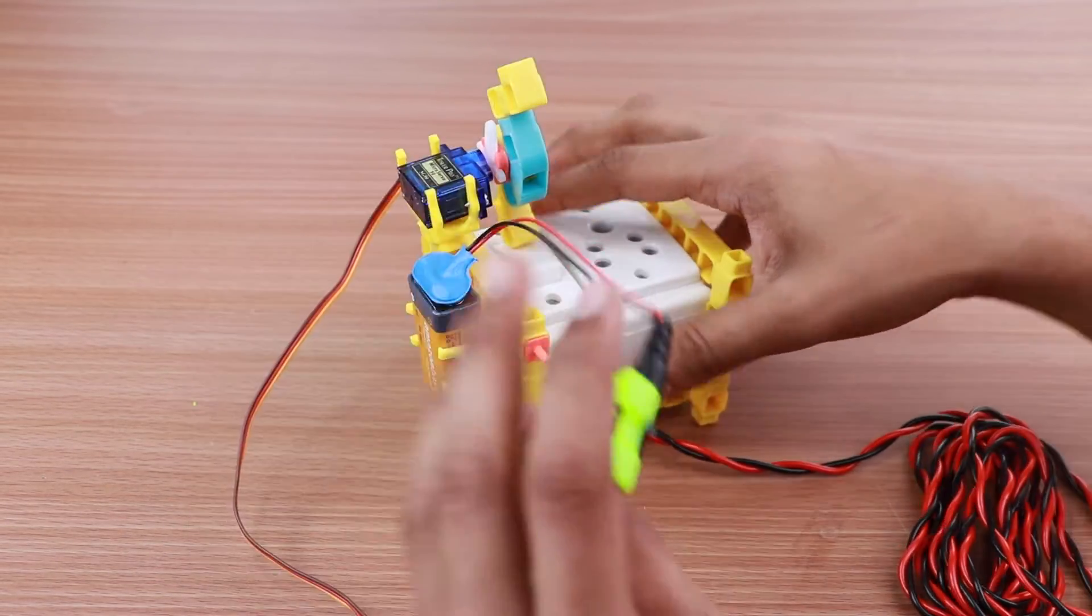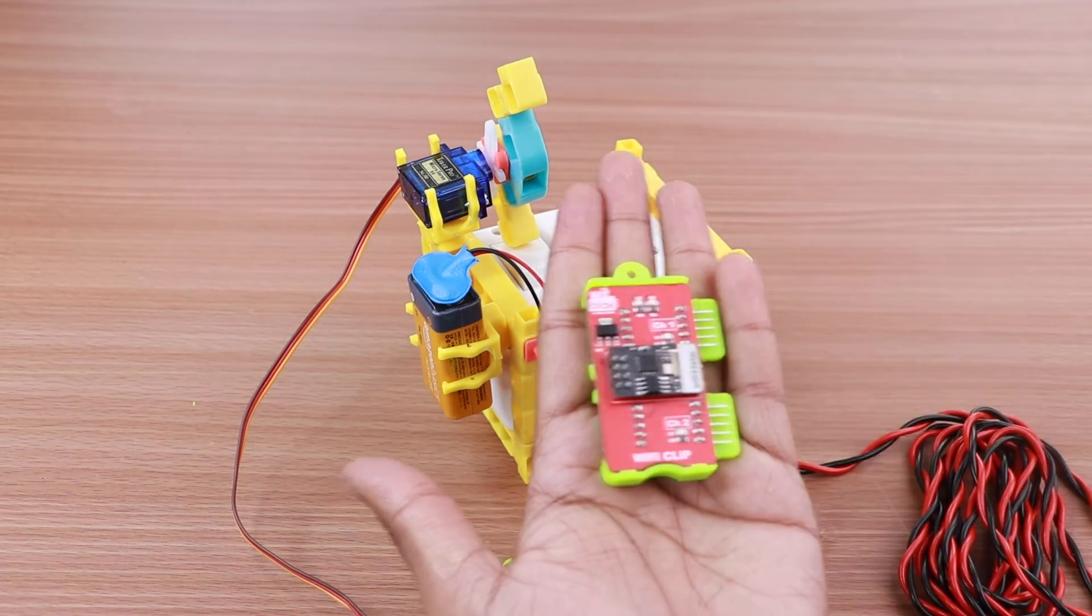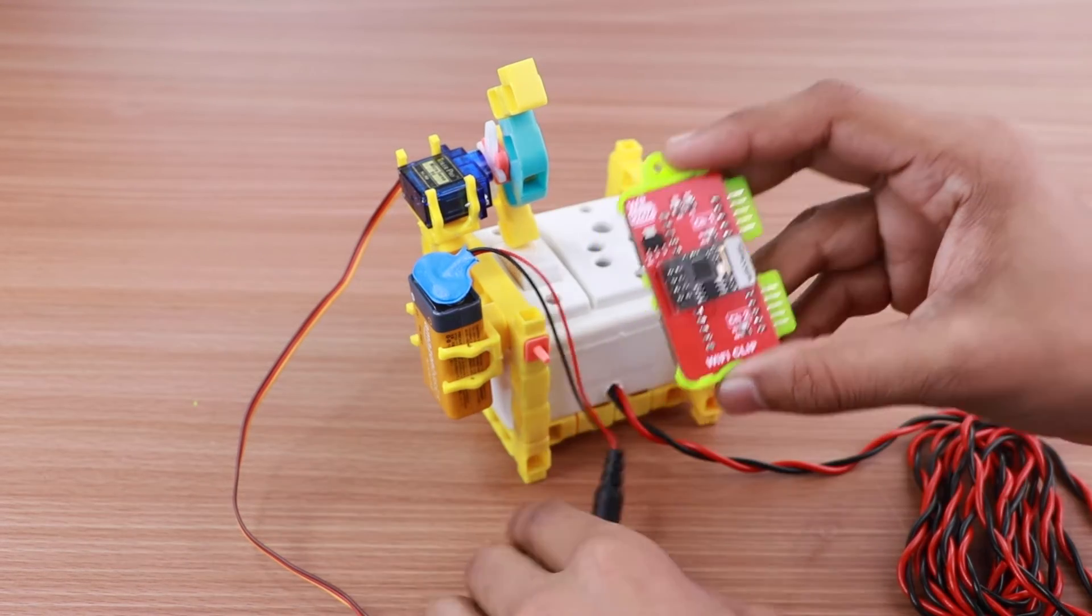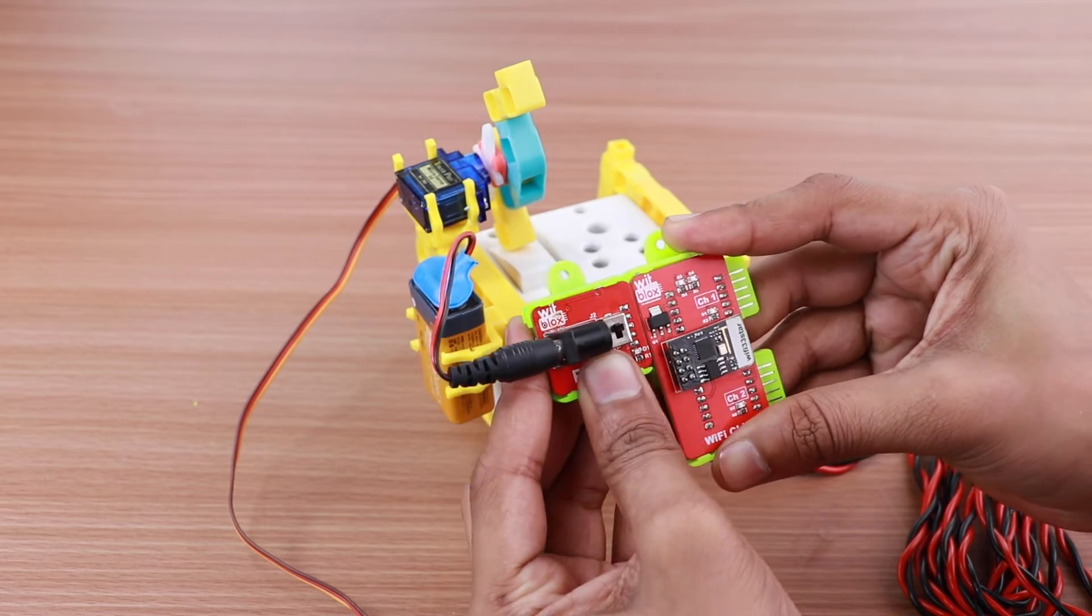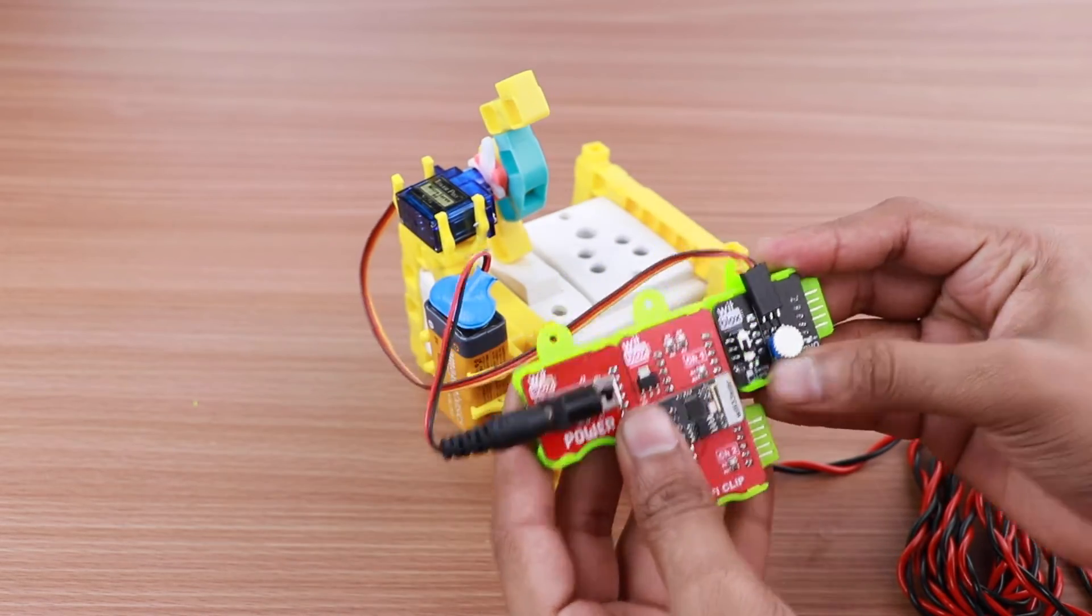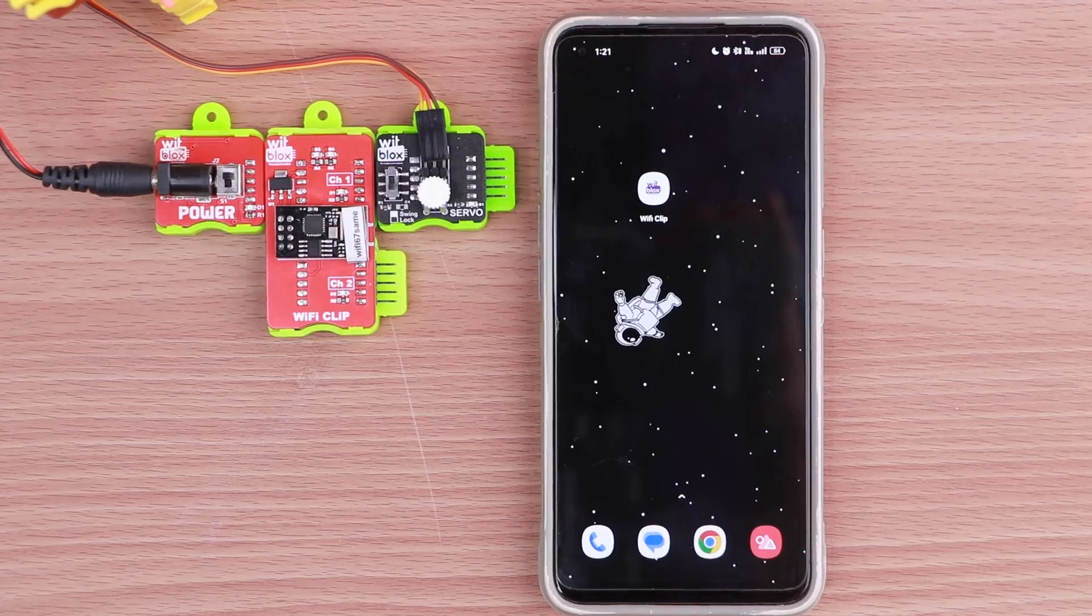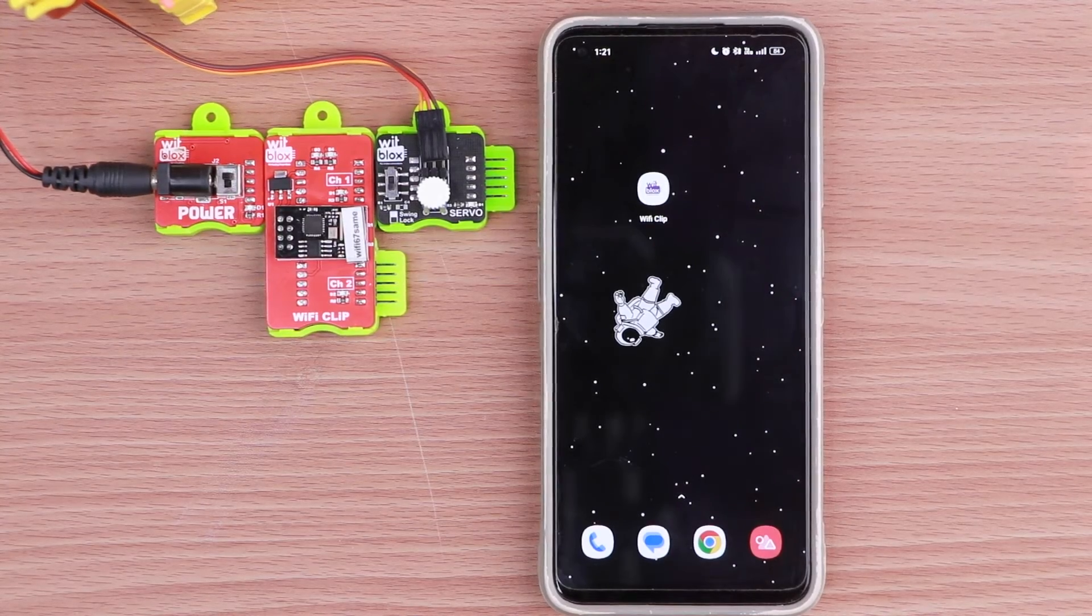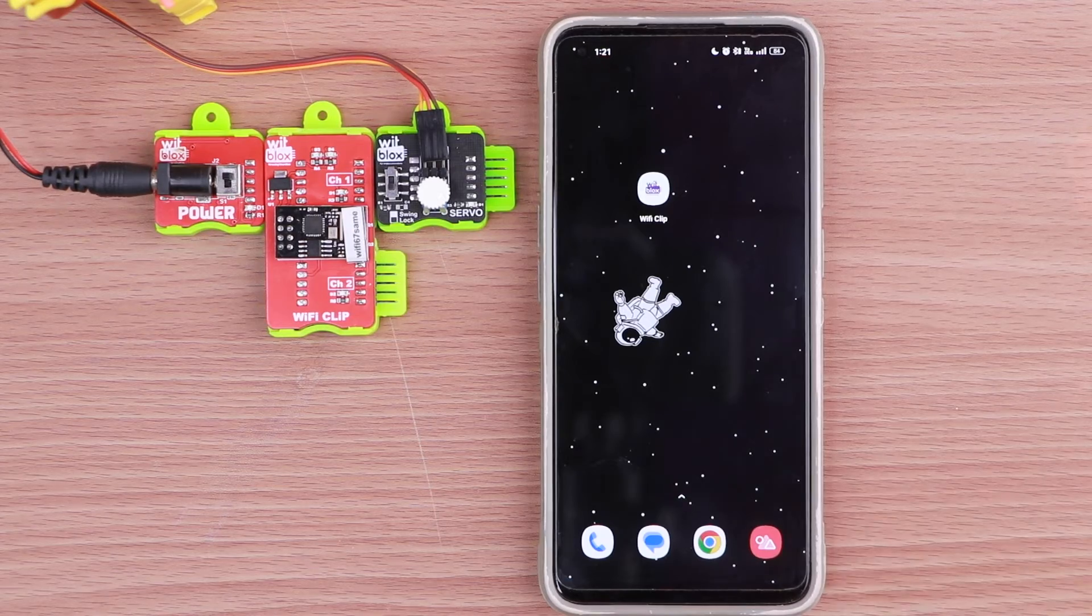The last step is to create the logic for the switches working. First, connect the power blocks to the Wi-Fi two-channel blocks. Then join the servo blocks to the Wi-Fi blocks. This completes the logic part. Now let's see how to control our Wi-Fi switchboard using our mobile phone.